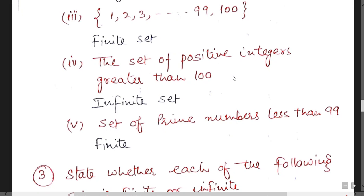Set of positive integers greater than 100. Greater than 100 you can write any number of items. That is why it is infinite set.